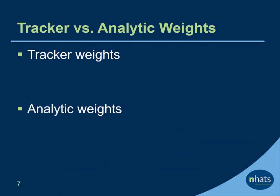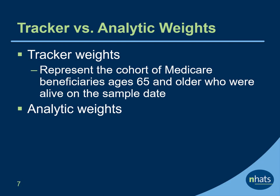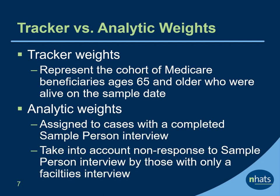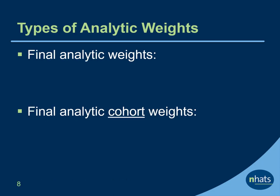The tracker weights and analytic weights allow inferences for different populations. The tracker weights represent the cohort of Medicare beneficiaries ages 65 and older who were alive on the sample date. Analytic weights are assigned to cases with a completed sample person interview, including those with a last month of life interview. These weights take into account non-response to the sample person interview by those with only a facility interview. Most often, analysts will want to use the analytic weights.